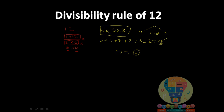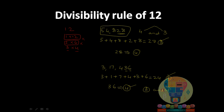Let's take another number: 3,17,436. Check divisibility by 3 — sum of digits: 3+1+7+4+3+6 = 24, which is a multiple of 3. Then check divisibility by 4 — last two digits are 36, which is a multiple of 4. So when it is divisible by both 3 and 4, it is also divisible by 12.